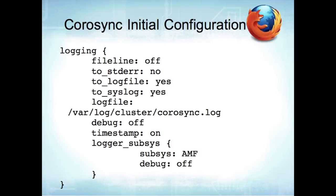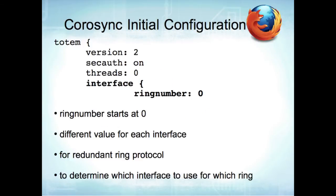The logging section includes options like to_stderr no, to_logfile yes, to_syslog yes, and you can turn debugging on or off — on would be a lot more verbose. You can add a timestamp. There's also an AMF subsystem section for event handling. I want to stick with getting a working configuration file so you can get this up and running, then turn off a node and see that failover works.